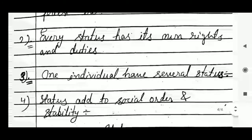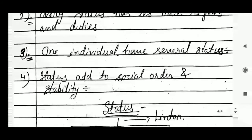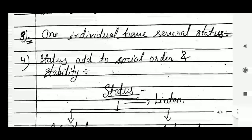Third, one individual can have several statuses. For example, an individual can be a parent or father, a teacher, a voter, and a citizen all at the same time. Fourth, status adds to social order and stability — it tells everyone in society what their position is and what they should do accordingly.